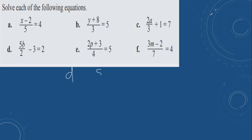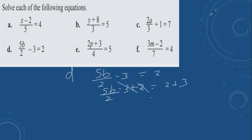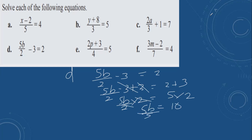Then d: 5b divided by 2 minus 3 equals 2. The opposite of minus 3 is plus 3 on both sides. These cancel. 5b divided by 2 equals 5. Multiply both sides by 2. 2 and 2 cancel. 5b equals 10. Divide by 5. b equals 2.